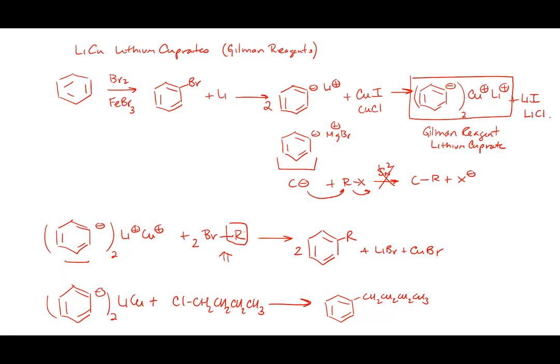The mechanism is beyond the scope of this course — these are believed to be SET (single electron transfer) reactions involving radicals. Most importantly, Gilman reagents don't undergo rearrangement, making them a perfect way to make straight-chained alkylbenzenes. You can do this with anything — it's a very useful reaction.